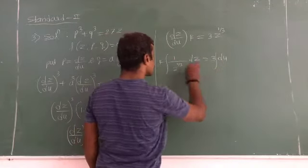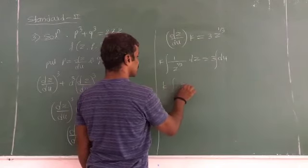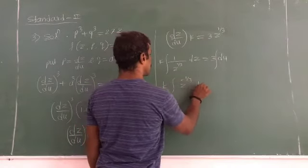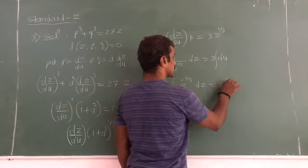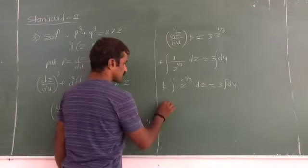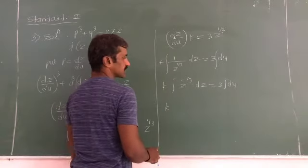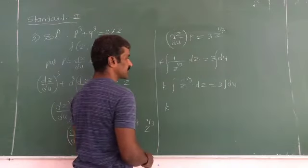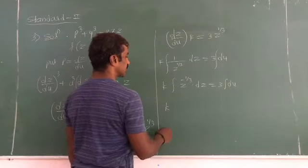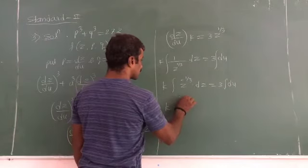Integrating, so k into integration of z raised to -1/3 dz. Integration of it is using the x raised to n formula: x raised to n+1 divided by n+1. So -1/3 + 1, means z raised to 2/3 divided by 2/3.